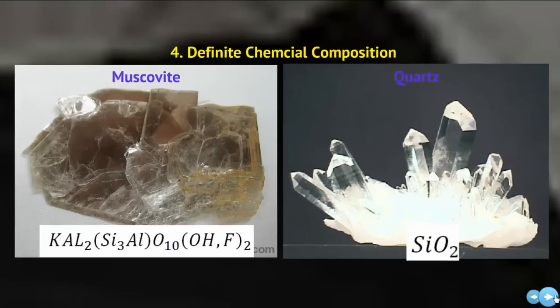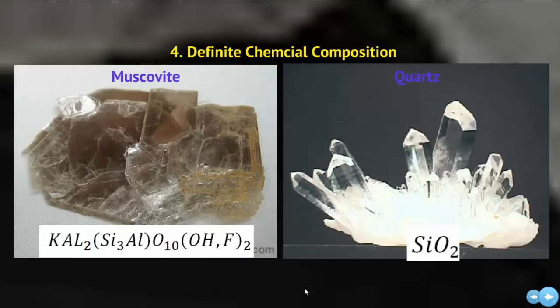The fourth criteria is a definite chemical composition, which basically means there is a specific recipe. For example, quartz is one silicon atom and two oxygen atoms — that's the chemical composition and it can't change. It could be a very short formula like quartz, or a really long chemical formula like muscovite. Either way, it has a definite chemical composition.